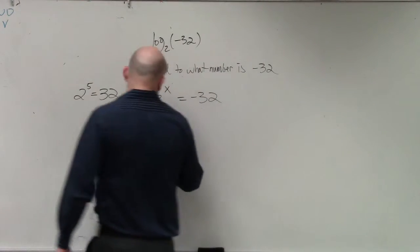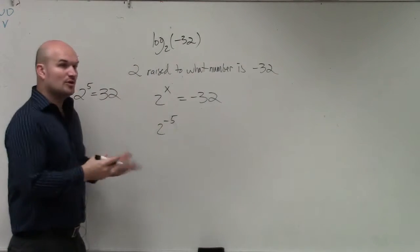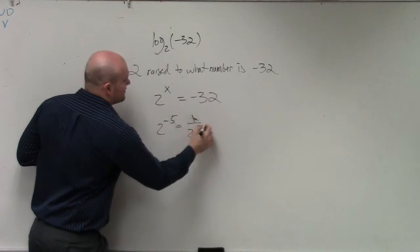So what most students do is say, well, then why don't we do negative 5? Well, the problem with that is because when you have the negative 5, that's 1 over 2 to the fifth.